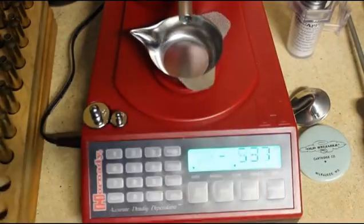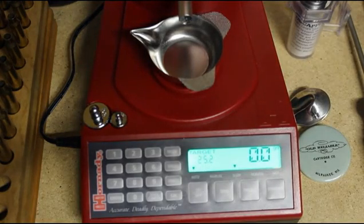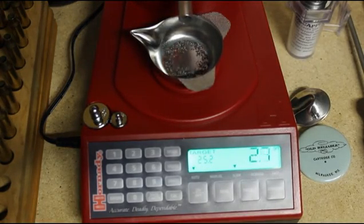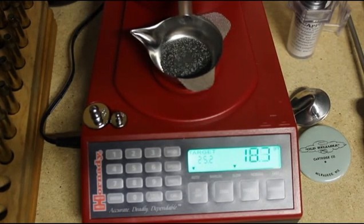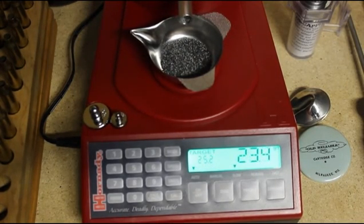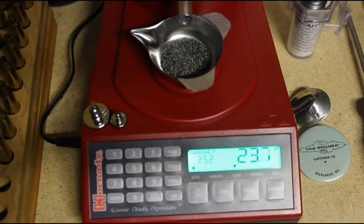And there is a good charge. We go ahead and dispense that into a case. And when we put the pan back on the platform, it'll zero and then throw another charge. Get another case ready. There's 23.9, and it's slowing down at 24.